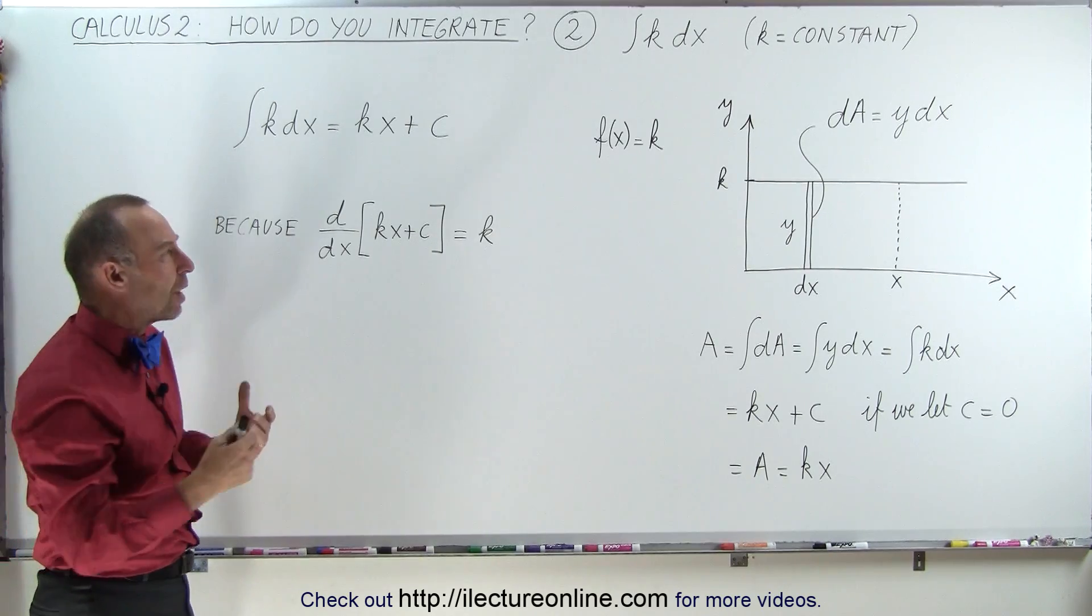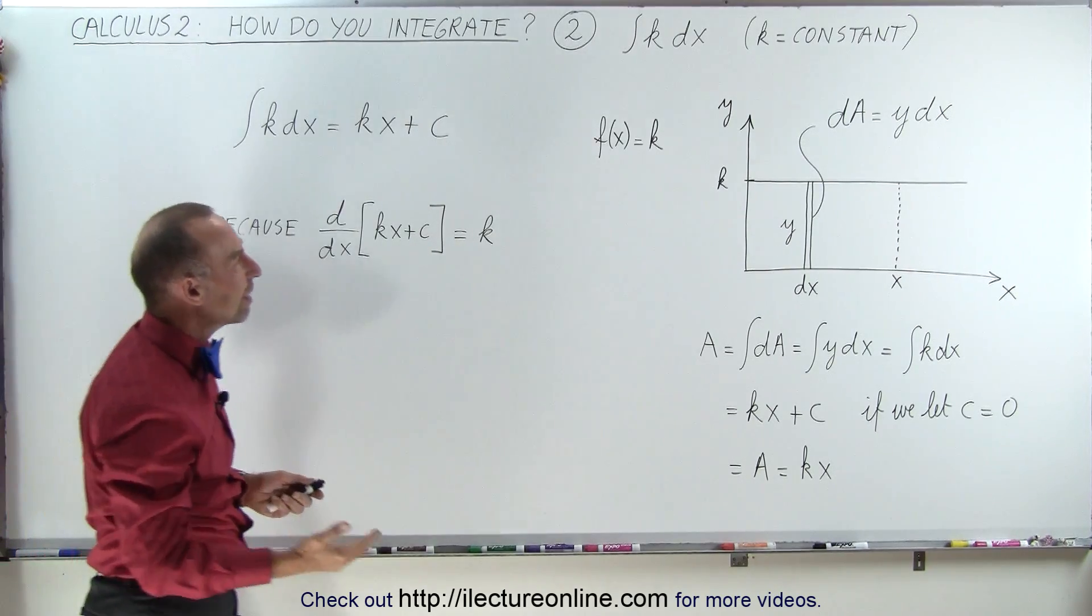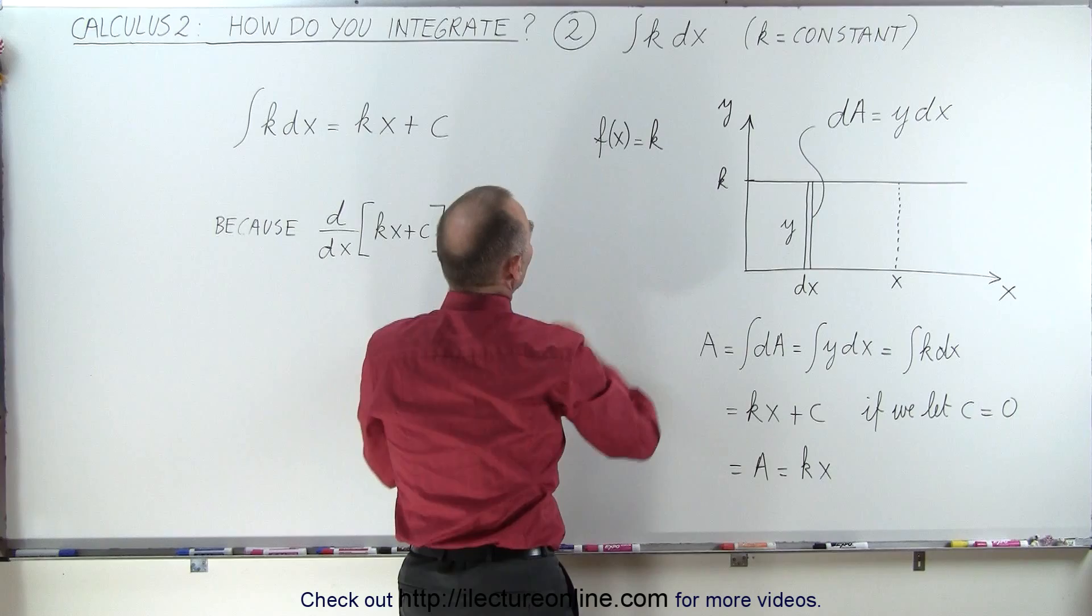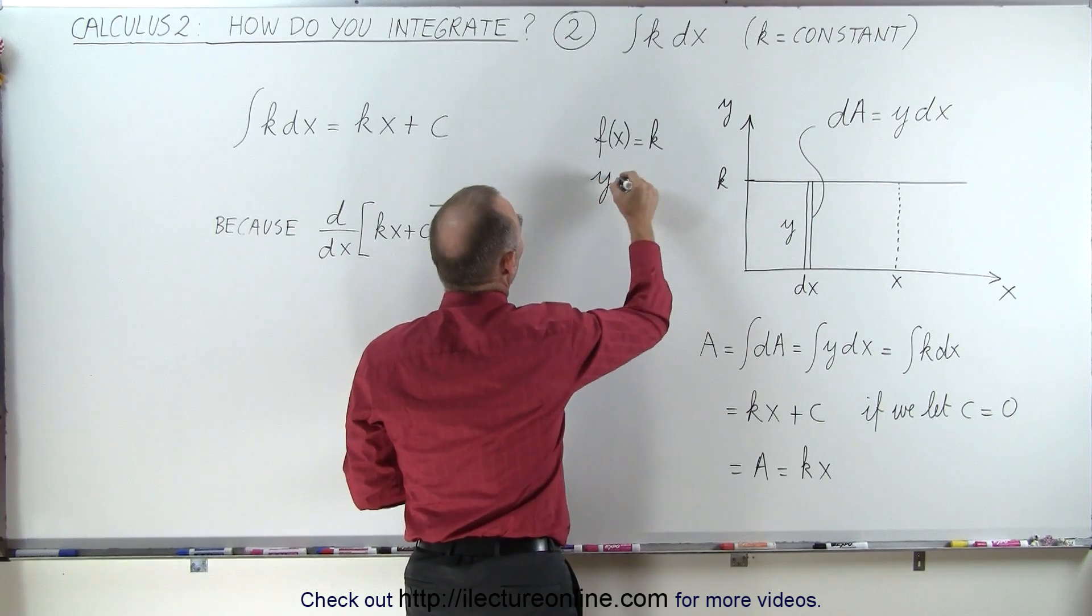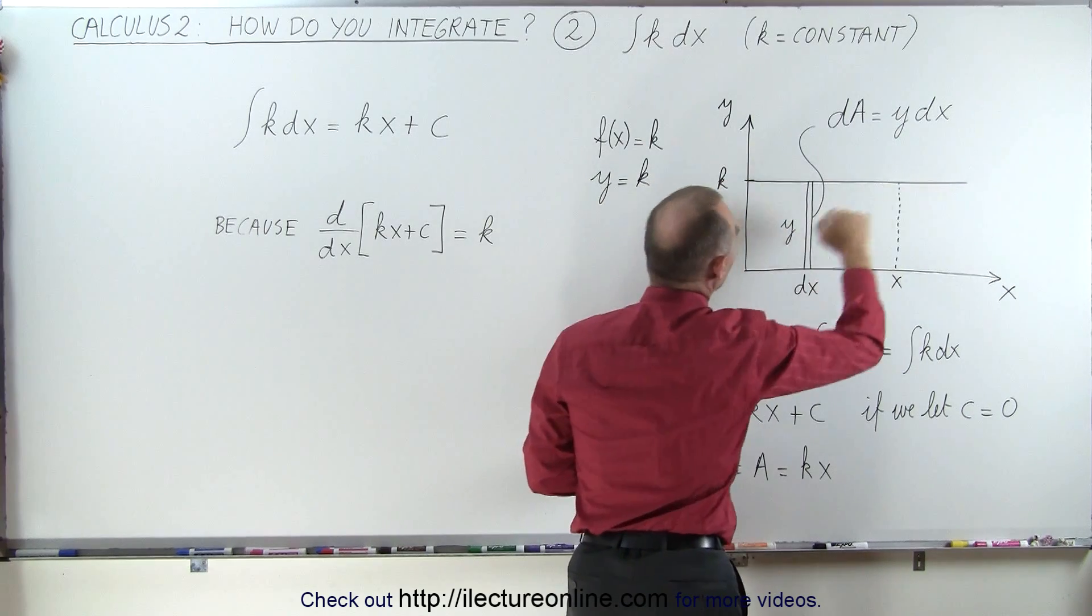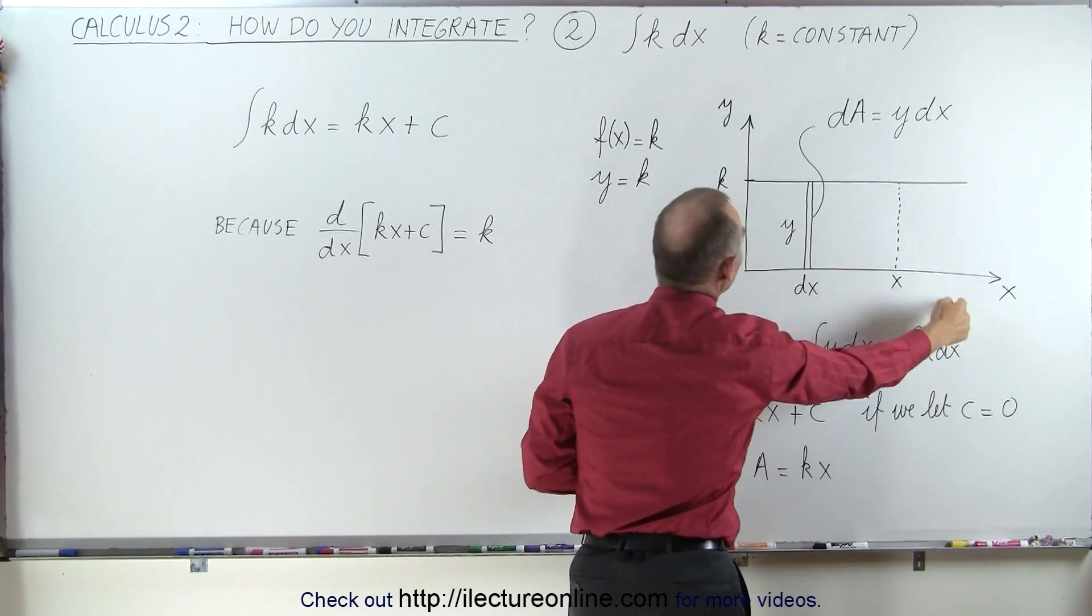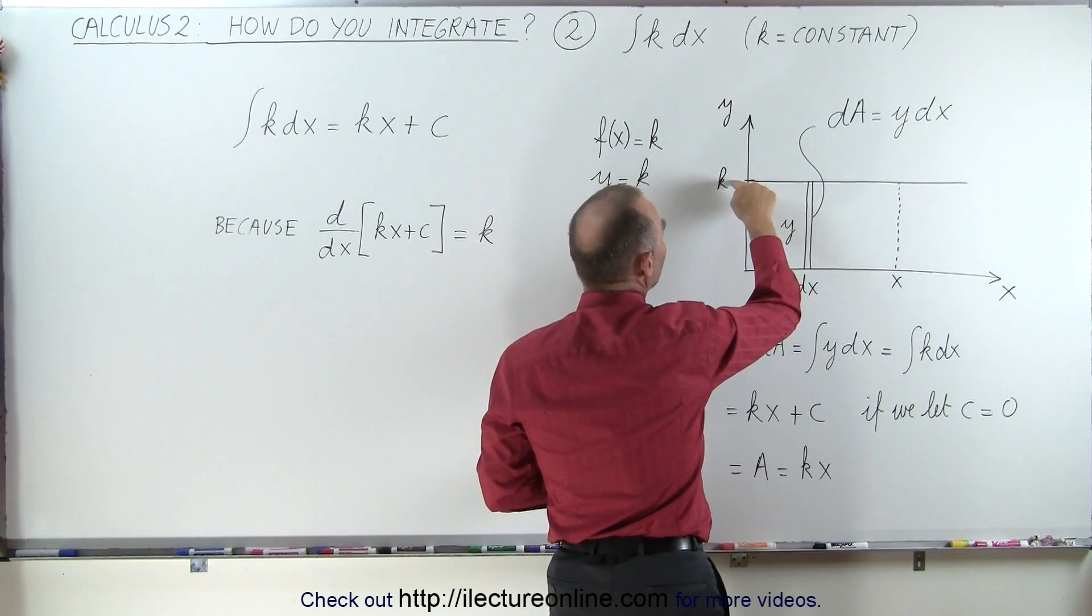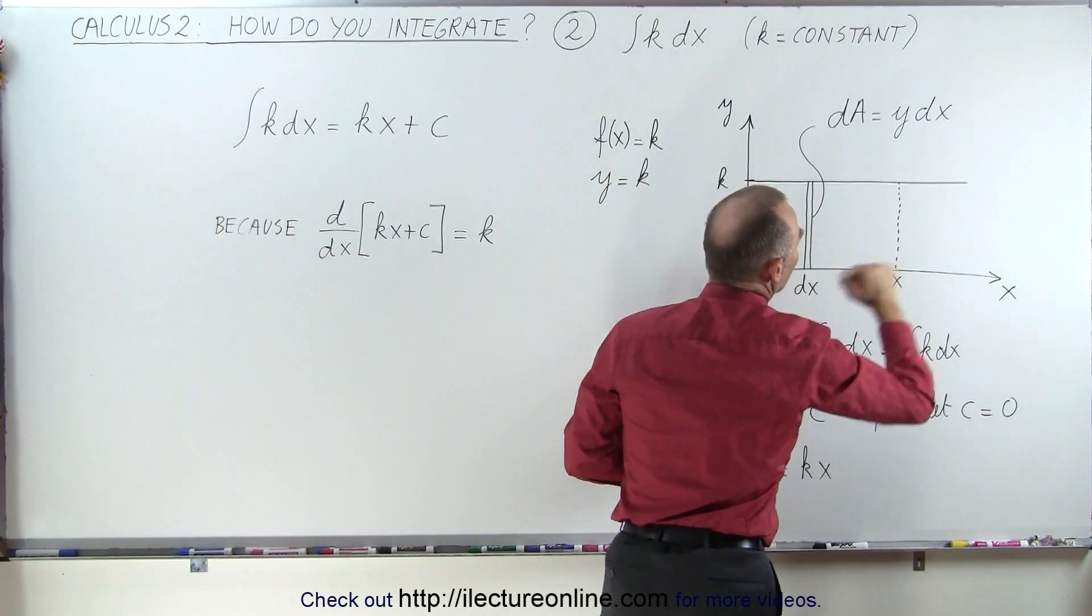But let's get a different view on what that really means. Let's say we have a function, f of x equals k, or we can simply write y equals k, which is a straight line, a horizontal line on the yx plane that is at y equals k and runs parallel to the x-axis.